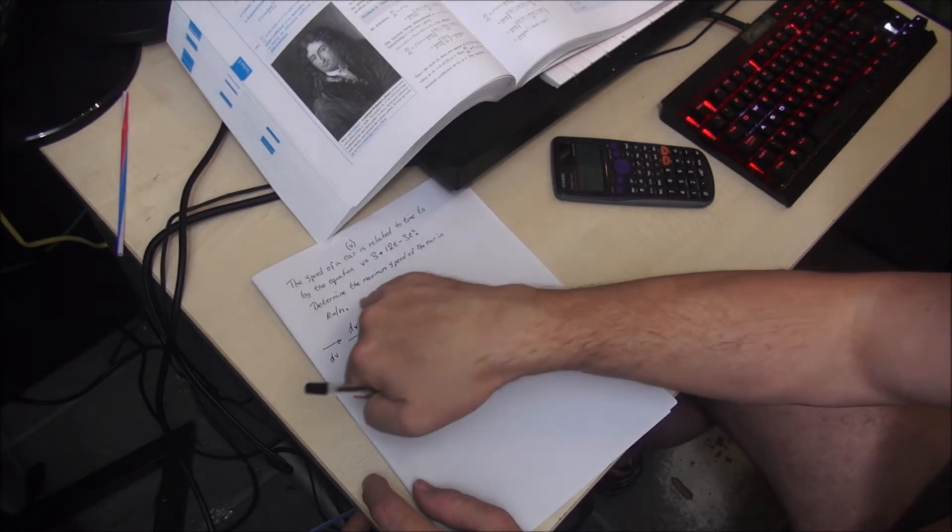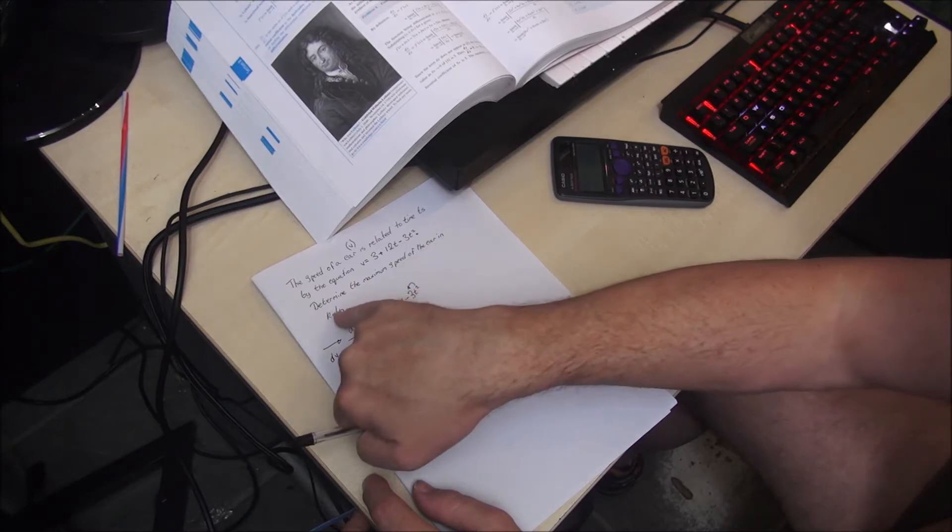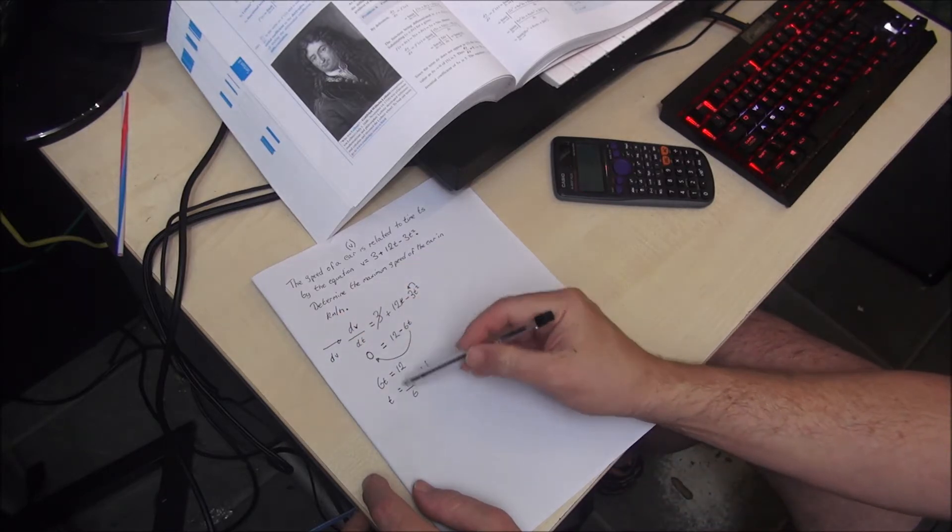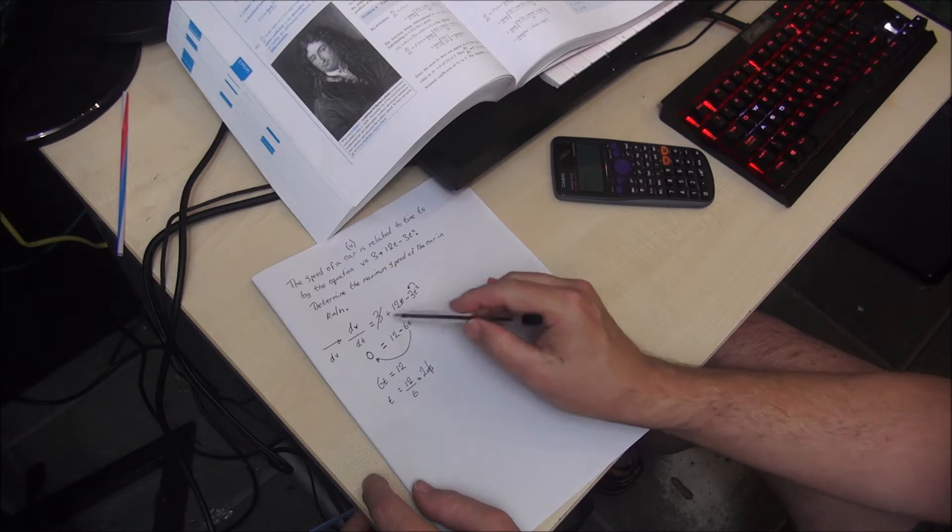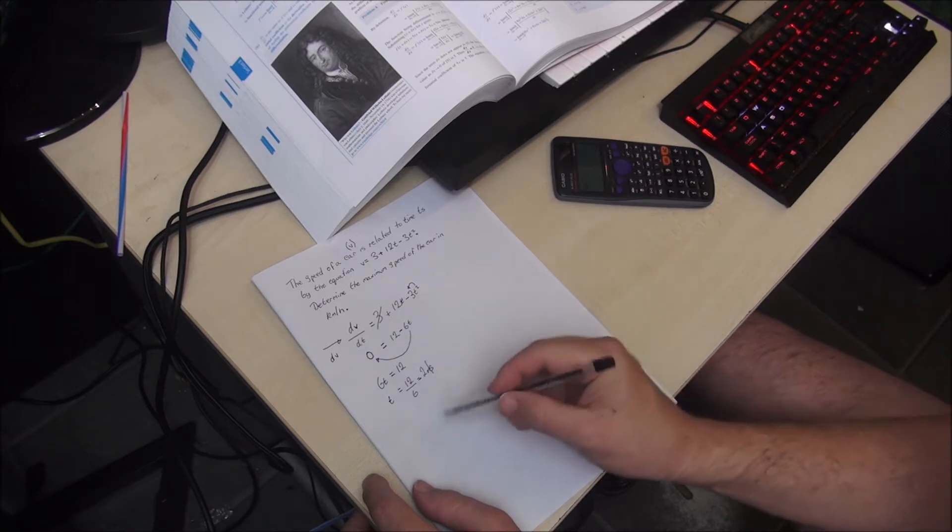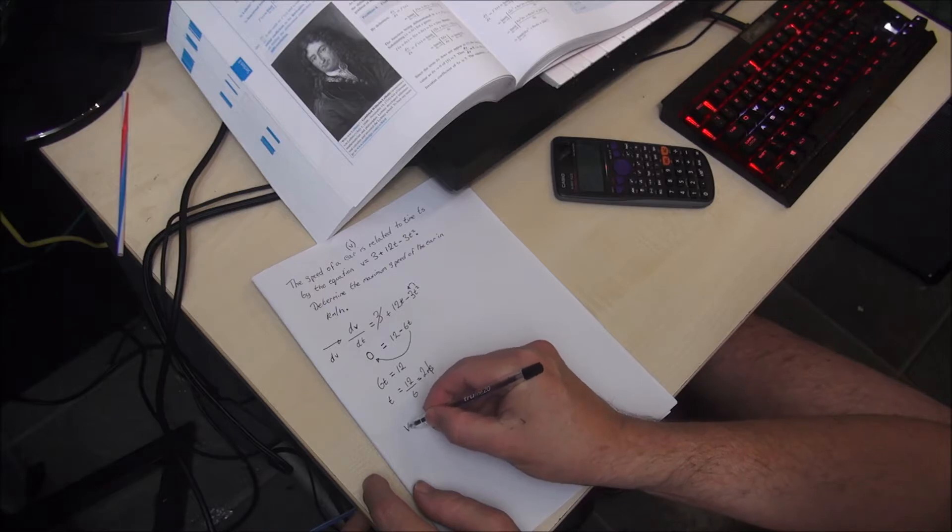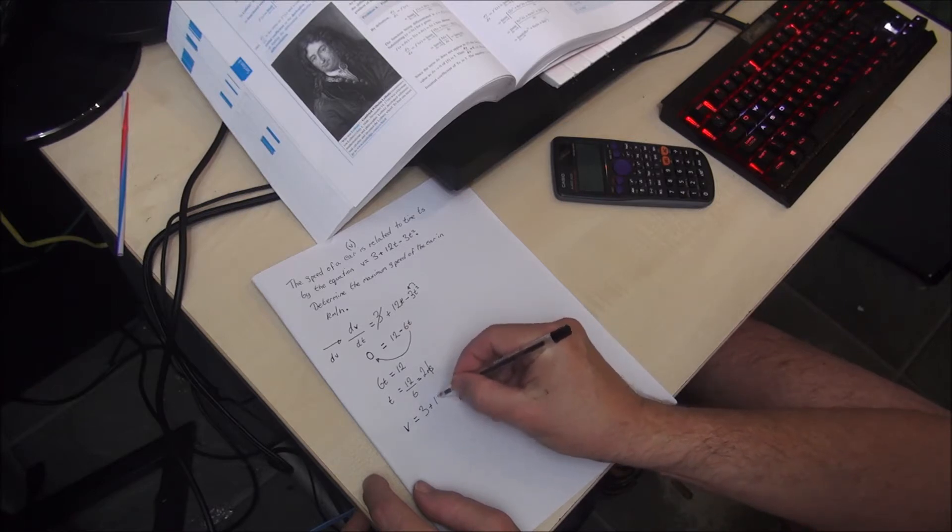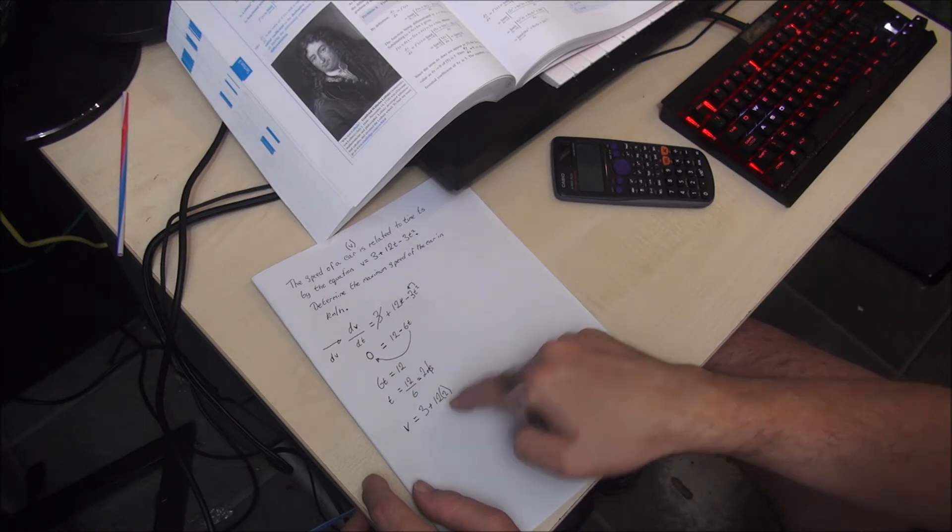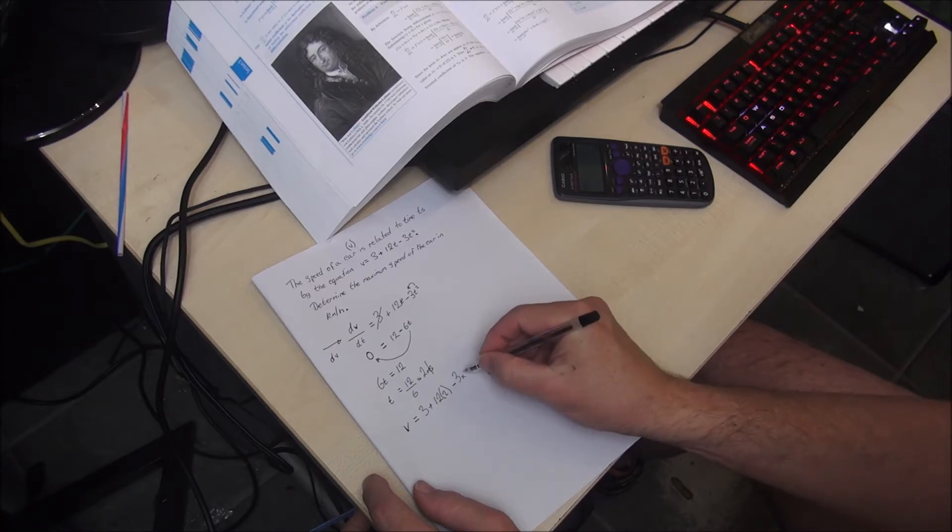So to determine the maximum speed of the car in kilometres per hour, now that we've found time, we can re-substitute that back into the original equation. So velocity v is equal to 3 plus 12 times 2, remember t is equal to 2, minus 3 times 2 squared.